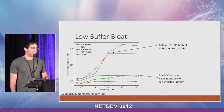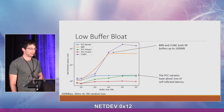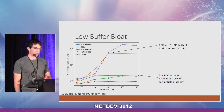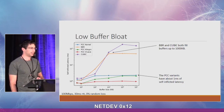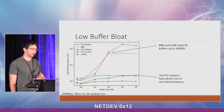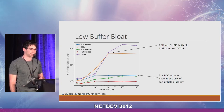For low buffer bloat — meaning how much self-induced latency the algorithm causes — all of the PCC variants do quite well. The kernel implementation does slightly worse than both user-space versions, probably due to the inaccurate calculation of the latency gradient in the utility. Both BBR and Cubic increase latency as the buffer fills.